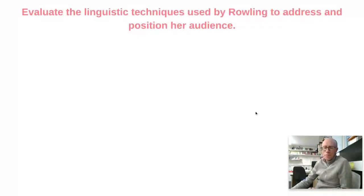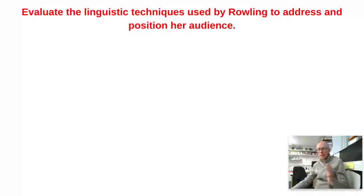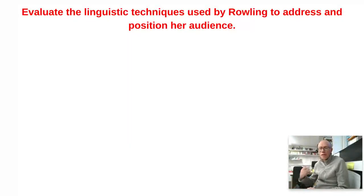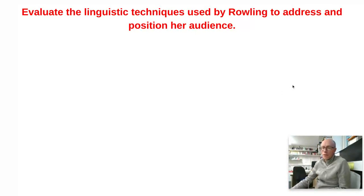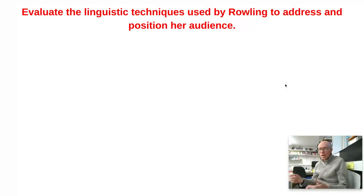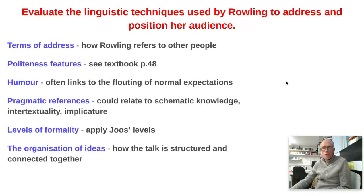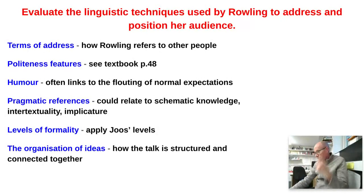So there you are — just the very beginning of that speech, and a classic hybrid, blended mode text, where obviously she's written it beforehand and here she is delivering it verbally. Evaluate the linguistic techniques used by Rowling to address and position her audience. What would you hone in on at the beginning of a speech like this?